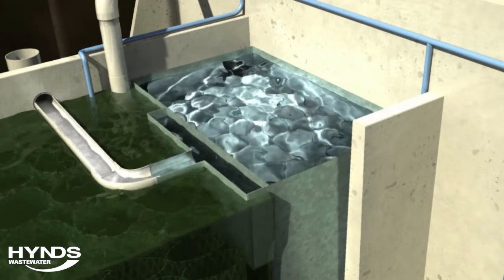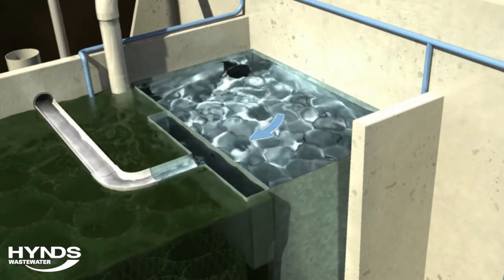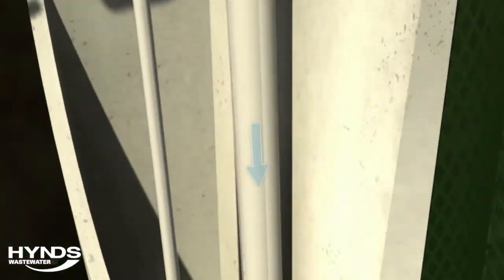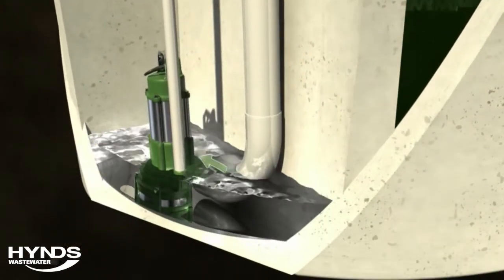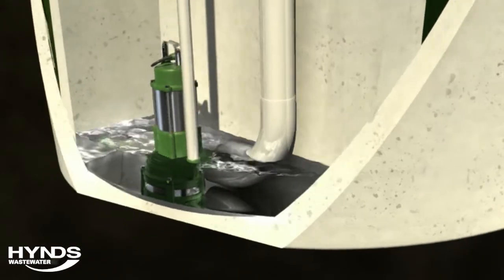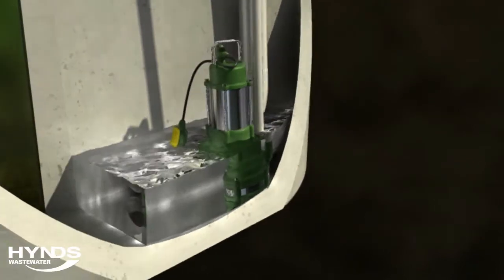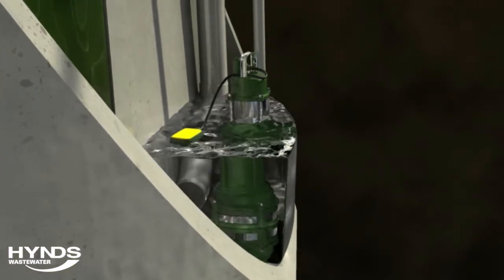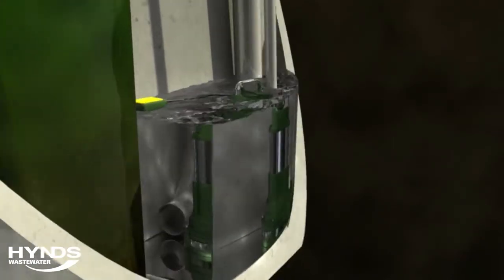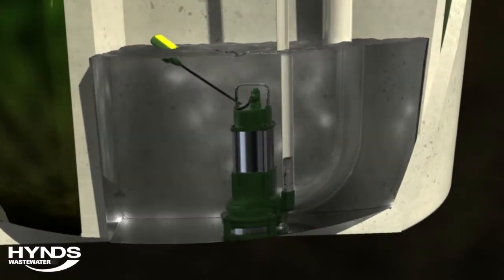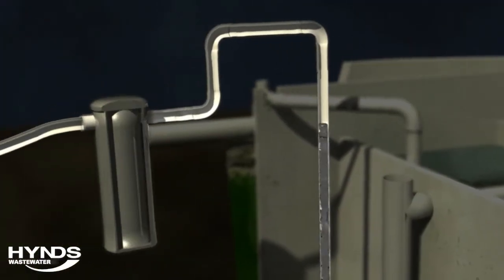Once the water has passed up through the separator, it flows into the final chamber in the system. This chamber is a storage tank that holds the treated wastewater until it is ready for discharge. Once sufficient water is in the chamber, a float switch activates a pump, sending the water out of the tank through a pressure pipeline.